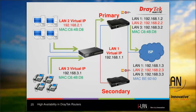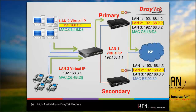In the network topology shown in the diagram, although the primary and secondary routers have different LAN IP and MAC addresses, all LAN clients use the virtual IP as their gateway IP address. For example, as highlighted, the primary router has a LAN 2 IP address of 192.168.2.2, the secondary router has 192.168.2.3, and the virtual IP address is set to 192.168.2.1, which is used by devices on LAN 2 as the default gateway.